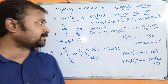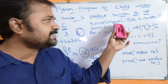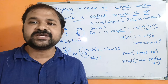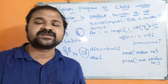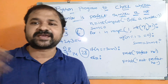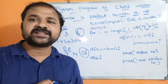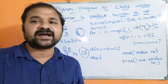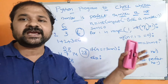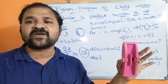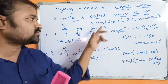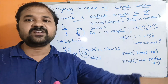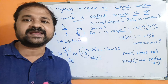Now let us see the program. Using the input function we can read data from the keyboard, but the problem is input always returns a string. Since we want to perform operations on numbers, we have to use the int function to convert the string into an integer.